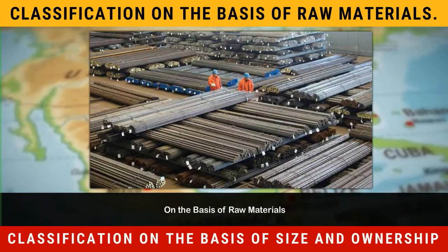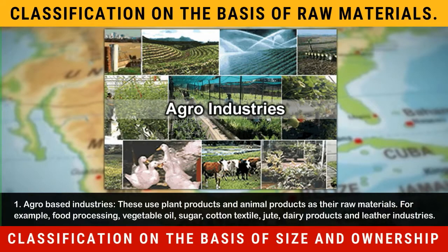On the basis of raw materials: 1. Agro-based industries. These use plant products and animal products as their raw materials. For example, food processing, vegetable oil, sugar, cotton textile, jute, dairy products and leather industries.